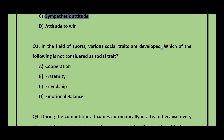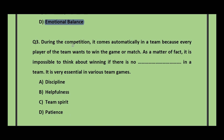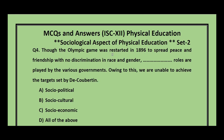Question number 2: In the field of sports, various social traits are developed. Which of the following is NOT considered a social trait — cooperation, fraternity, friendship, or emotional balance? The answer is emotional balance. Question number 3: During competition, team spirit comes automatically because every player wants to win. It is impossible to win if there is no team spirit; it is very essential in various team games. The answer is team spirit.